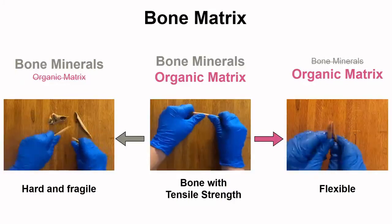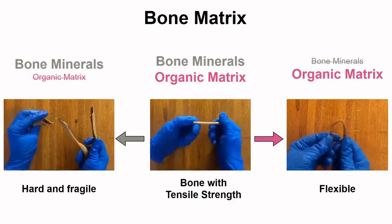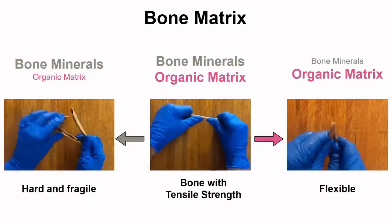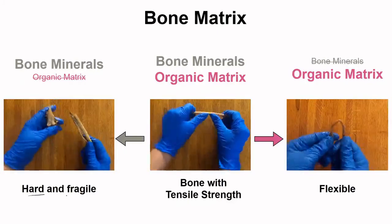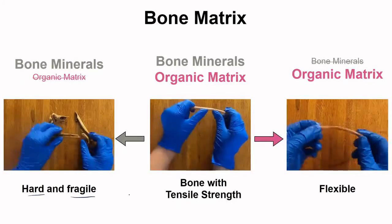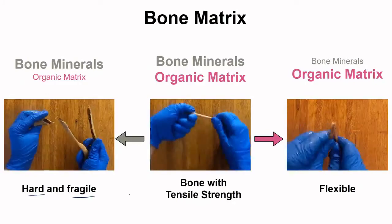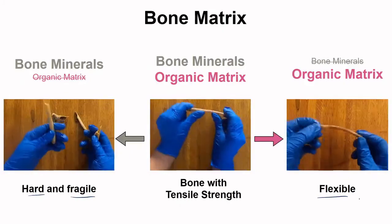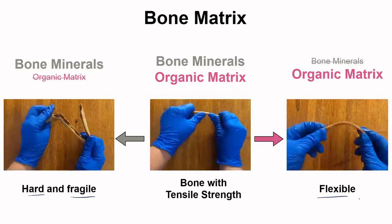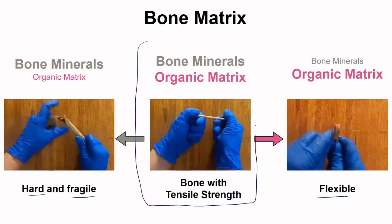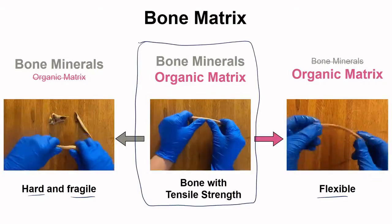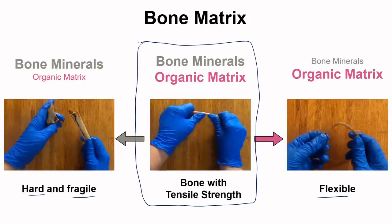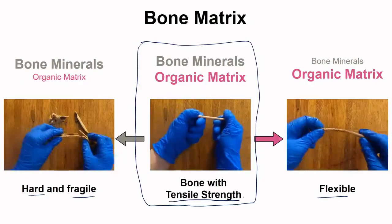The demonstration from earlier was to show the importance of both the mineral and organic components of the bone matrix. When the organic matrix is removed from bone, it becomes hard and fragile — like we saw with the one that just shattered. Whereas if bone is demineralized, it is completely flexible and doesn't hold its structure. The ratios in our bones represent a 'Goldilocks zone' — just right — with a mix of both allowing the bone to bend a little under forces but also remain strong. This is what we call tensile strength.